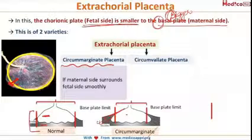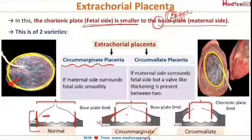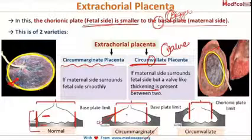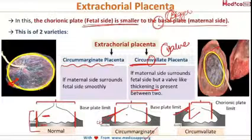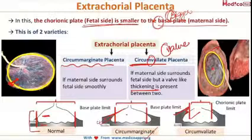Now, if this transition is not very smooth and there is a fold of fetal membranes forming a valve-like thickening all around the fetal side, it is called circumvallate placenta. As seen in this diagram, the maternal side is surrounding the fetal side and there is a fold of membranes around it which forms a valve-like thickening. In circumvallate placenta, the fetal side is slightly depressed compared to the maternal side, and on ultrasound this fold of membrane appears as a thick linear band or shelf-like structure.